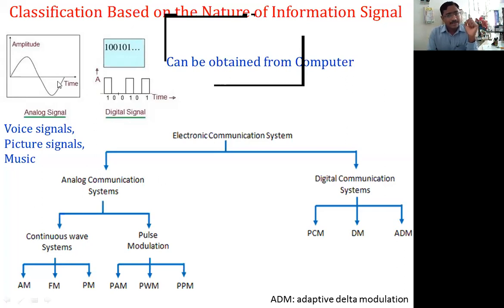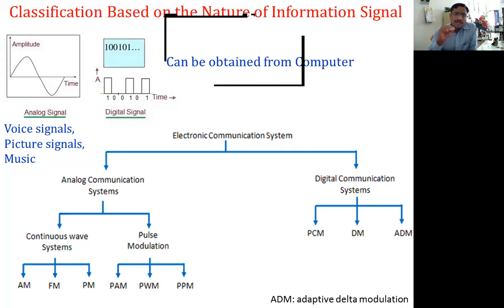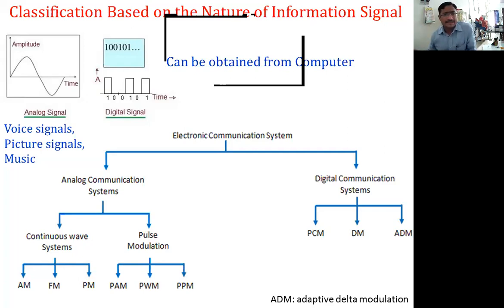Based on whether your information signal is analog or digital, the electronic communication system can be categorized into two types: first is the analog communication system, and second is the digital communication system. An analog signal is one whose amplitude varies continuously over time, whereas for a digital signal the amplitude varies in a discrete manner like a binary sequence of ones and zeros.